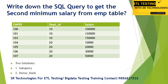We'll also look at the second maximum salary from the employee table. The table has columns: employee, department ID, and salary. The second minimum salary here is thirty thousand. There are two approaches we're going to take: one is subquery, and another one is dense rank.